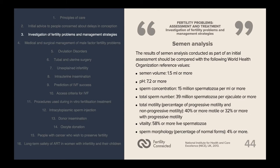The WHO reference values for semen analysis are as follows: semen volume ideally 1.5 mL or more; pH of 7.2 or higher; sperm concentration of 15 million spermatozoa per mL or more; total sperm number of 39 million spermatozoa per ejaculate or more; total motility at least 40% motile, with at least 32% progressive motility; vitality of 58% or more live spermatozoa; and sperm morphology of 4% or more normal forms.